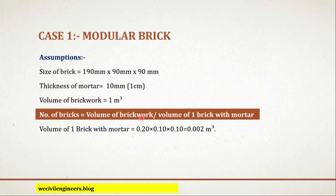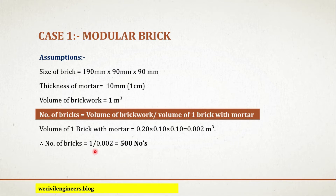Now we know the volume of brick work and the volume of 1 brick with mortar, that is the volume of the nominal brick. So substitute these two values in the formula. Therefore, number of bricks equals 1 divided by 0.002, which is equal to 500 numbers.